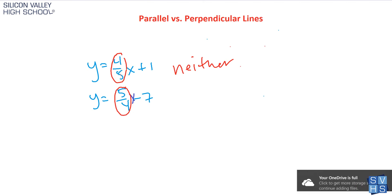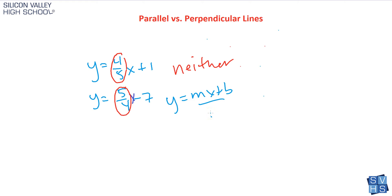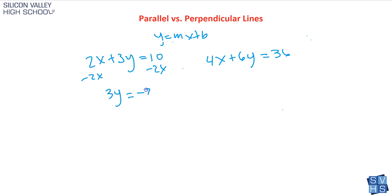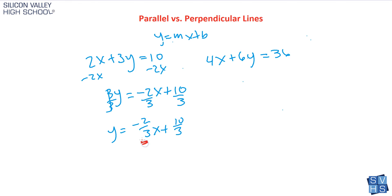The only hard part is when equations aren't given in y equals mx plus b format. If they're not, just get y alone. For the first equation, subtract 2x from both sides. Since the x and constant terms are not like terms, you just place them together, then divide by 3. You get y equals negative 2/3 x plus 10/3. The b doesn't matter — all I care about is that my slope is negative 2/3.